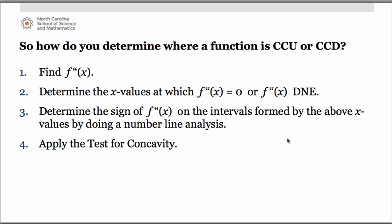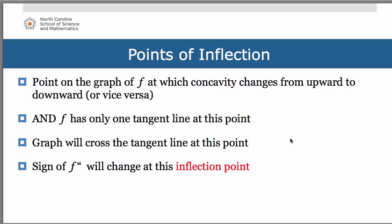The x values at which the second derivative equals zero or does not exist will soon have a name. We call those points of inflection. If there is a point on the graph of f at which concavity changes from concave up to concave down or vice versa, and if f has only one tangent line there, then the graph will cross the tangent line at this point. This point is called an inflection point, and the sign of the second derivative will change at this point.